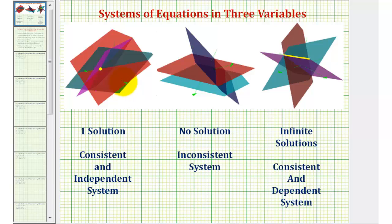It's also possible, if we graph three planes in space, that there aren't any points that are on all three planes. Therefore the system would have no solutions, and we can say the system is inconsistent.